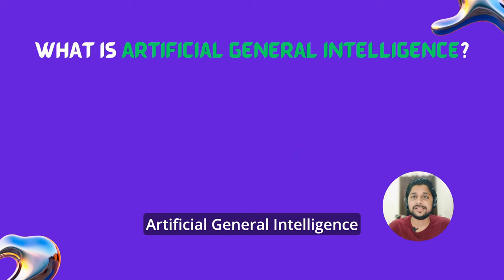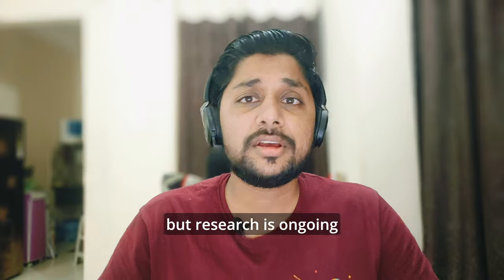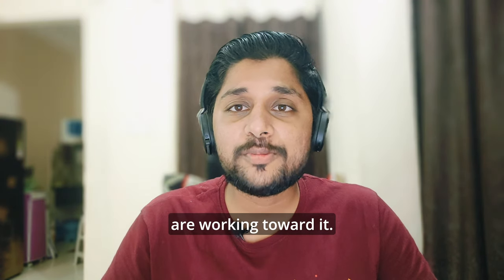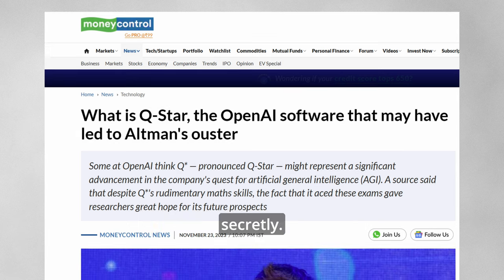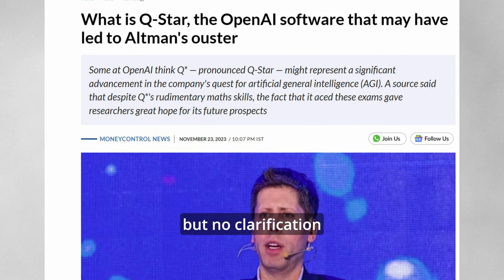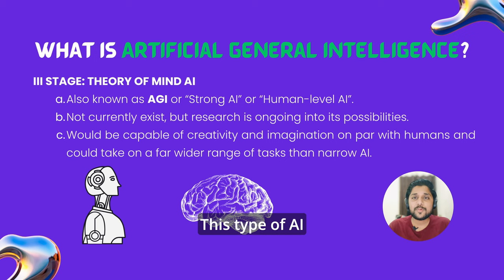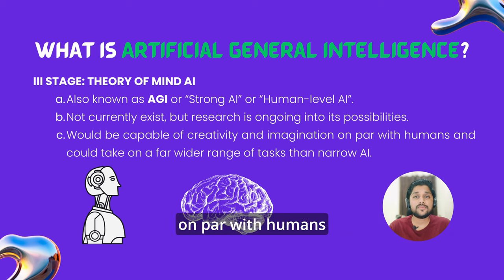The second type of AI is Artificial General Intelligence, which will come at the third stage of AI — Theory of Mind AI, sometimes called Strong AI or Human Level AI. AGI does not currently exist but research is ongoing. Even though it is currently out of reality, all major companies are working toward it. Recently, news came in that OpenAI, the ChatGPT organization, had achieved AGI secretly — that is why OpenAI fired its CEO — but no clarification came on that later, so it is still considered out of reality. This type of AI will be able to emulate the human mind and will have decision-making capabilities equal to that of a human, and would be capable of creativity and imagination on par with humans, taking on a far wider range of tasks than Narrow AI.